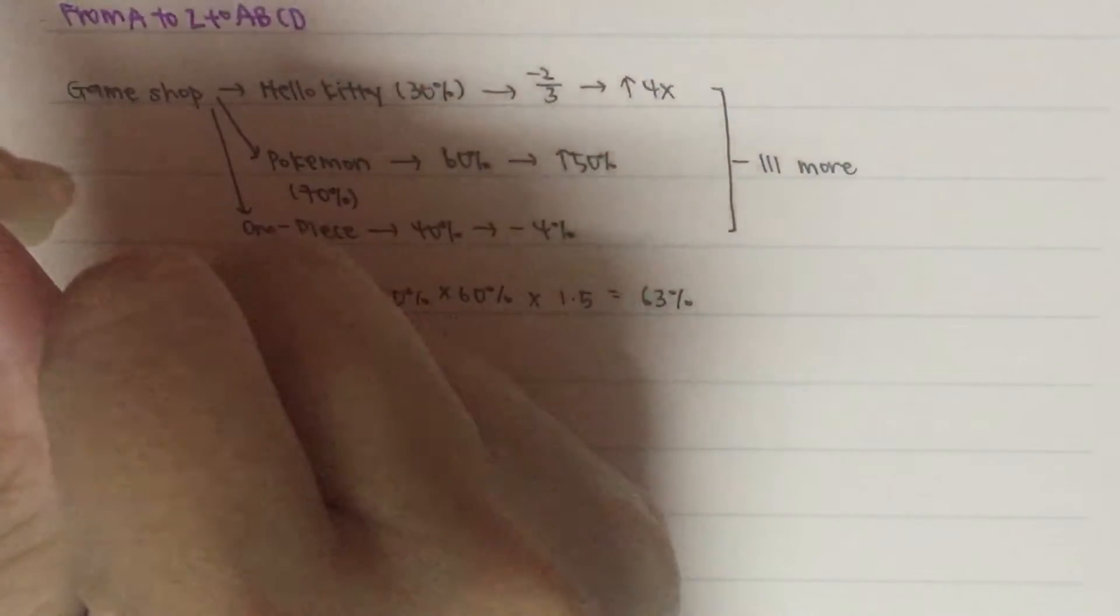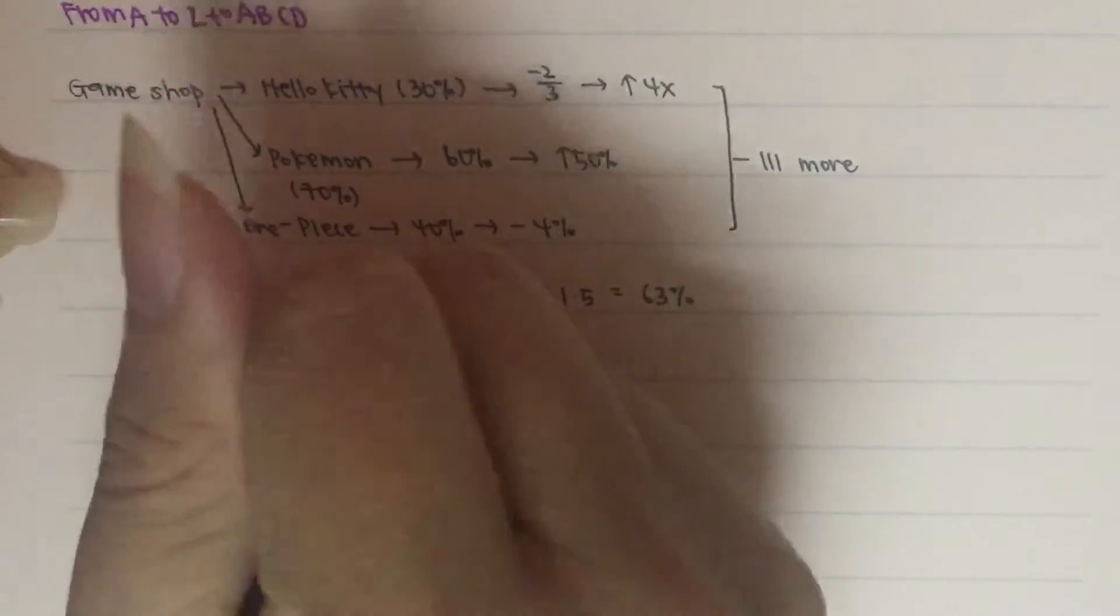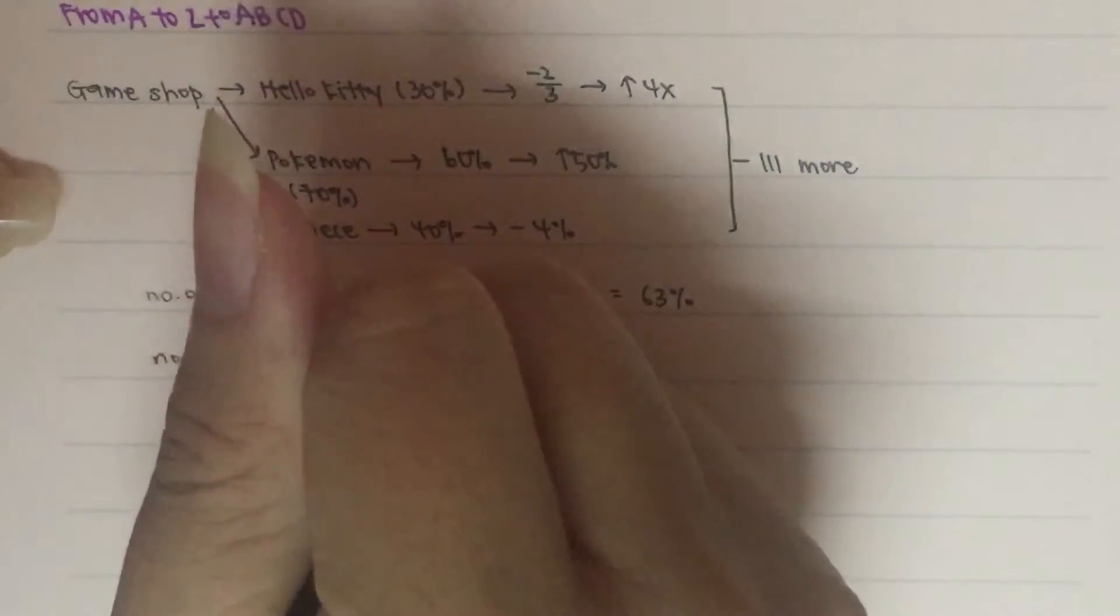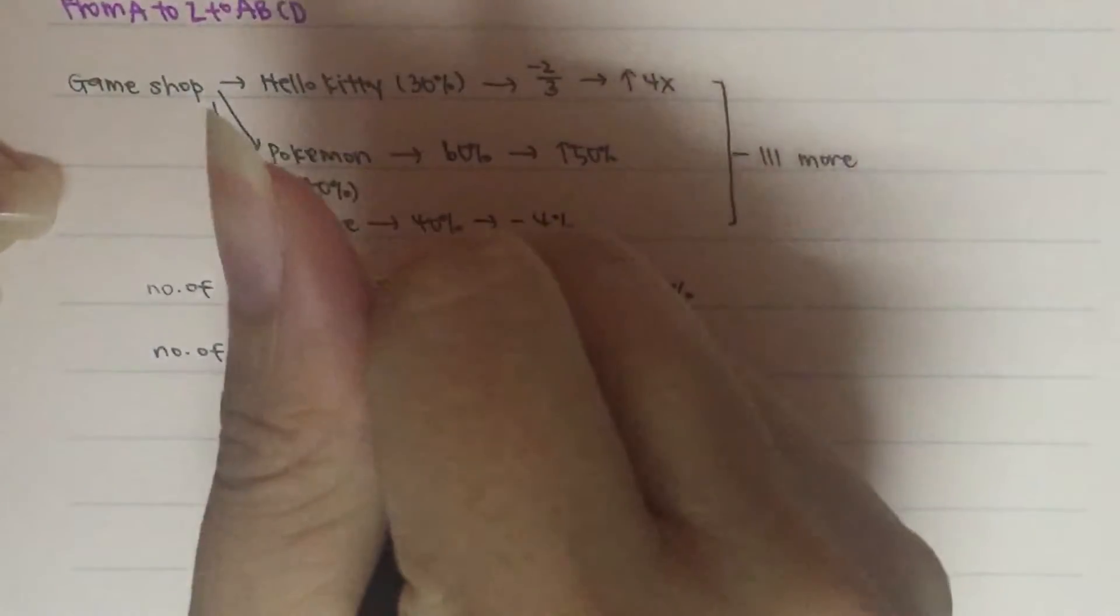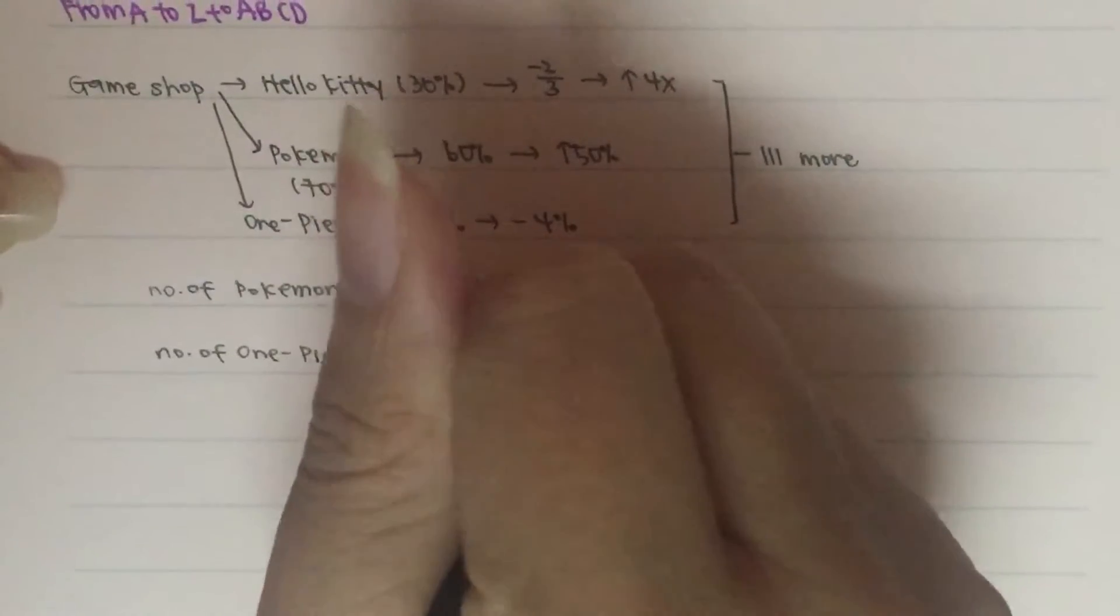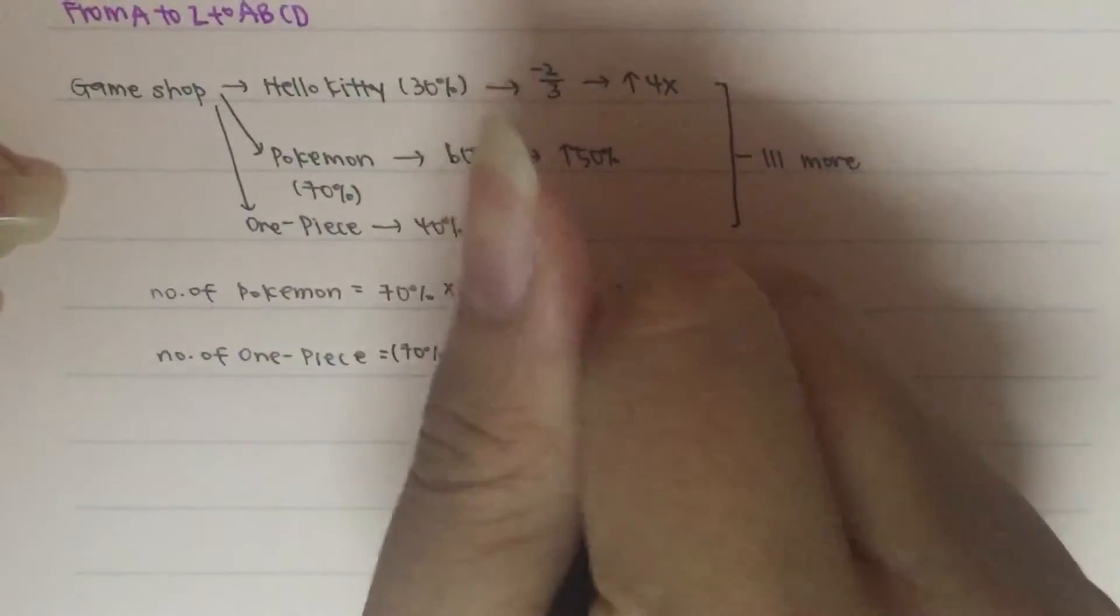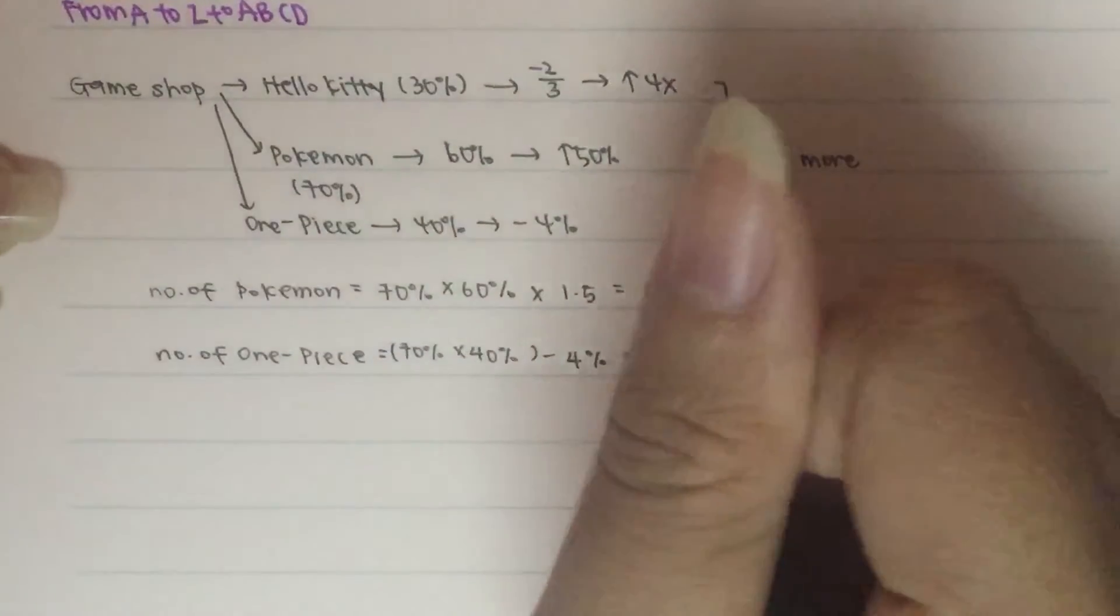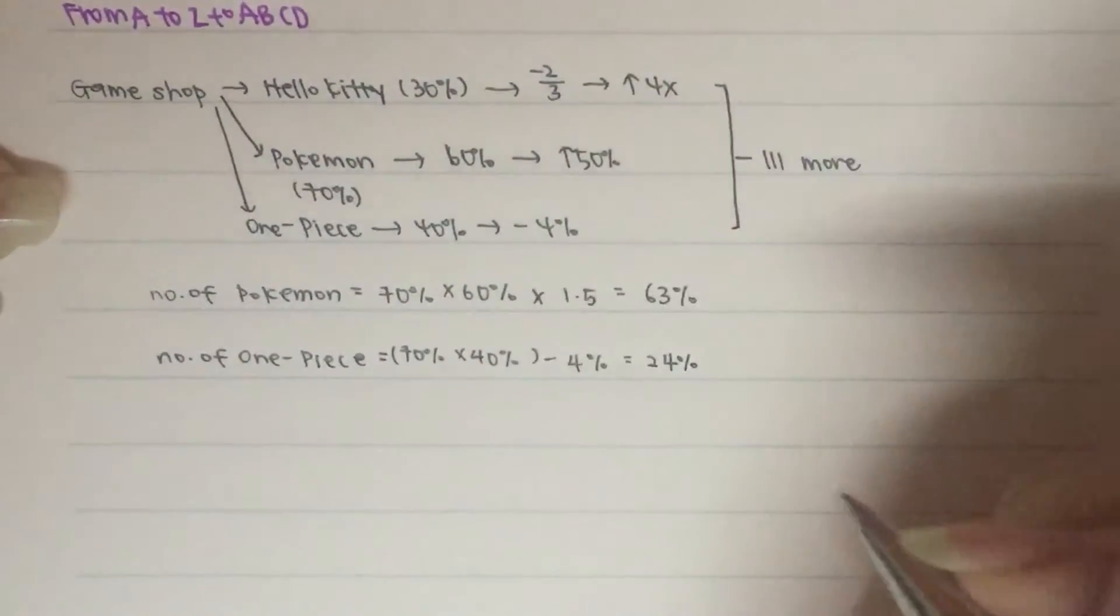Then next, we will calculate for the number of One Piece, which will be equal to the 70% times the remaining 40%. Then, there is a minus of 4% afterwards. So we will end up to have 24% over here.